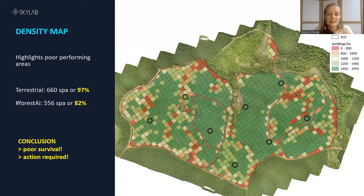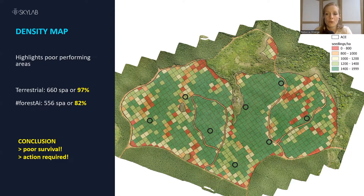The resulting density map gives you a very quick and clear overview of where the seedlings are thriving and where they're failing. In this case, you can see that none of the sampling plots happen to be in the poor performing areas. So instead of the 97% survival that was calculated from the terrestrial plots, the actual figure as an average per acre is only about 82%. So the conclusion is, actually, that's not so great, and maybe action is required.